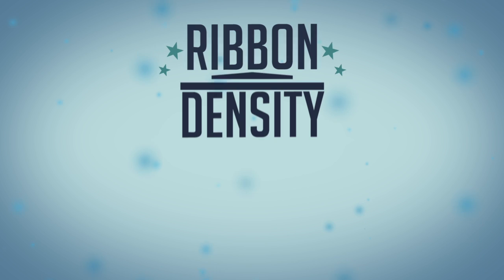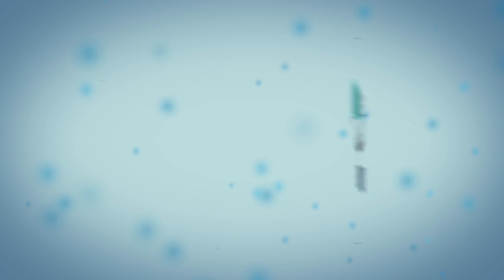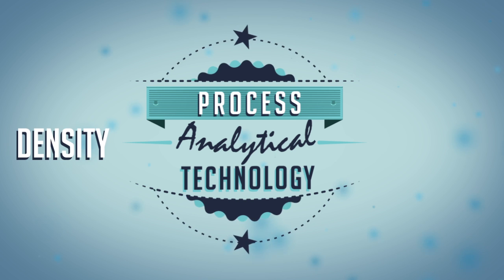Ribbon density and porosity affect both downstream processing and final product attributes, one of the most important being tablet dissolution rate. When implementing PAT, density and porosity measurements of roller compacted ribbons can help ensure consistent output of the roller compaction unit operation, alleviating downstream waste and product failures.